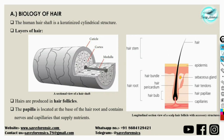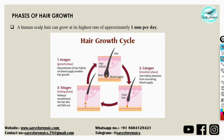The phases of hair growth are a very important topic, frequently asked in exams. Human scalp hair grows at approximately one millimeter per day. The hair growth cycle describes how hair shifts through various phases. The first phase is the anagen phase, also called the active growth phase, where nourishment via blood supply enables the hair to grow.